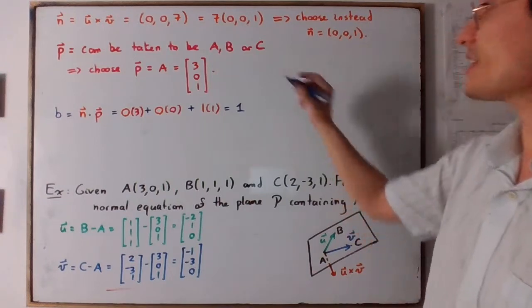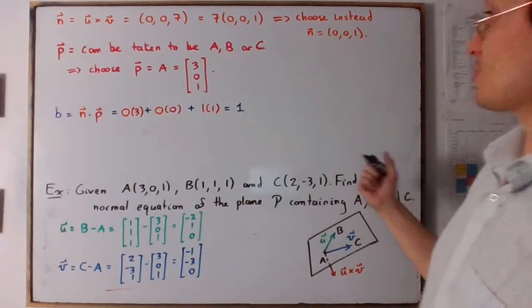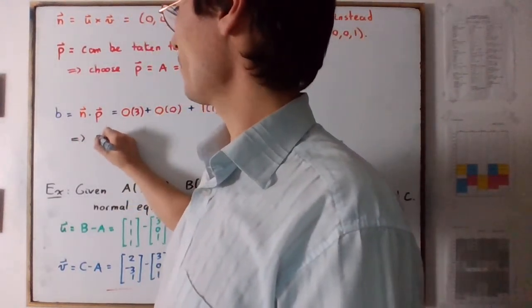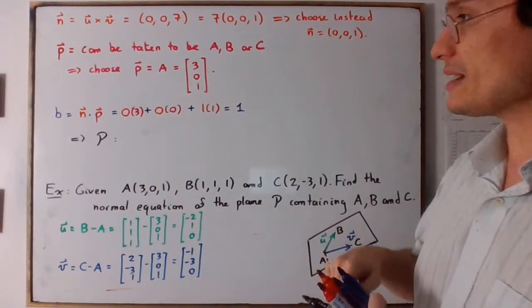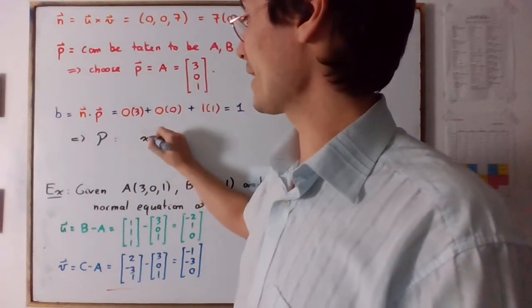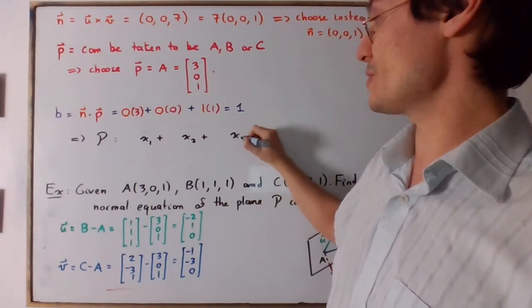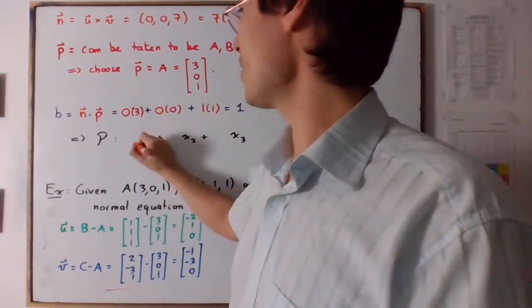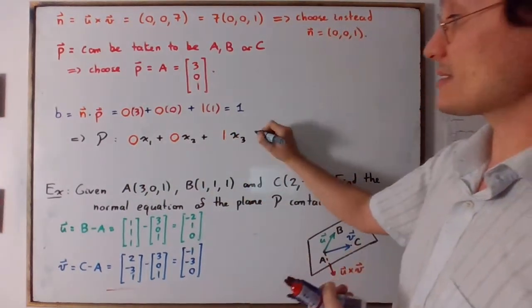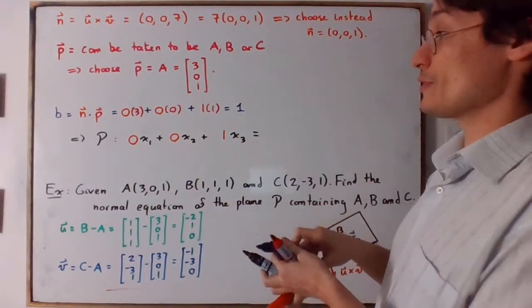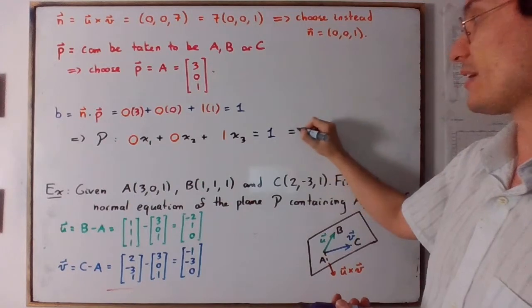Putting this all together, we have that the plane is going to be, so we're going to have x₁ plus x₂ plus x₃. And then these are the components of our normal vector 0, 0, 1. And then it's going to be equal to the value of B that we found, equal to 1. So let's just simplify this to get the final result.